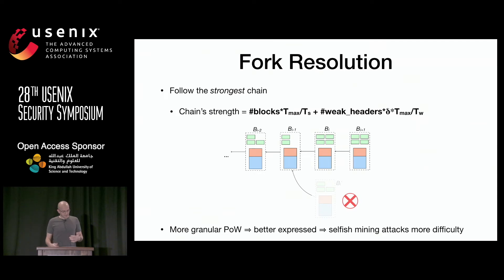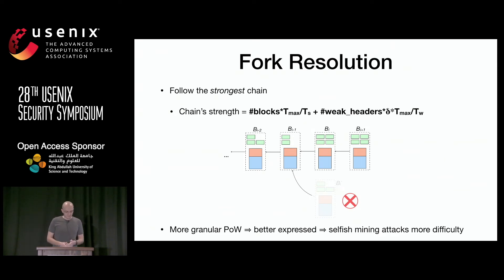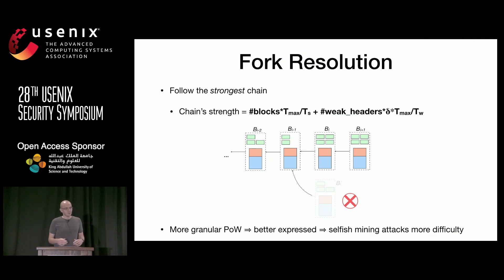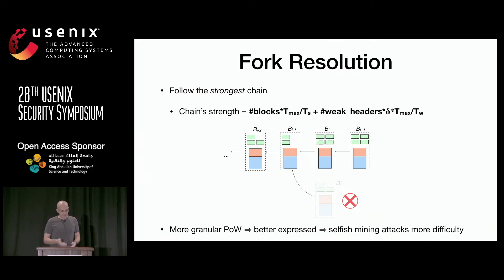In our protocol, proof-of-work power is expressed more accurately, which helps mitigate selfish mining attacks. The intuition is: if we set the weak target to maximum, every miner would publish all computed hashes, representing computing power perfectly — a 30% adversary would always compute exactly 30% of total hashes, making selfish mining impossible. We cannot send all hashes to the network, but we can balance this by adjusting the weak target to a level acceptable to the network.